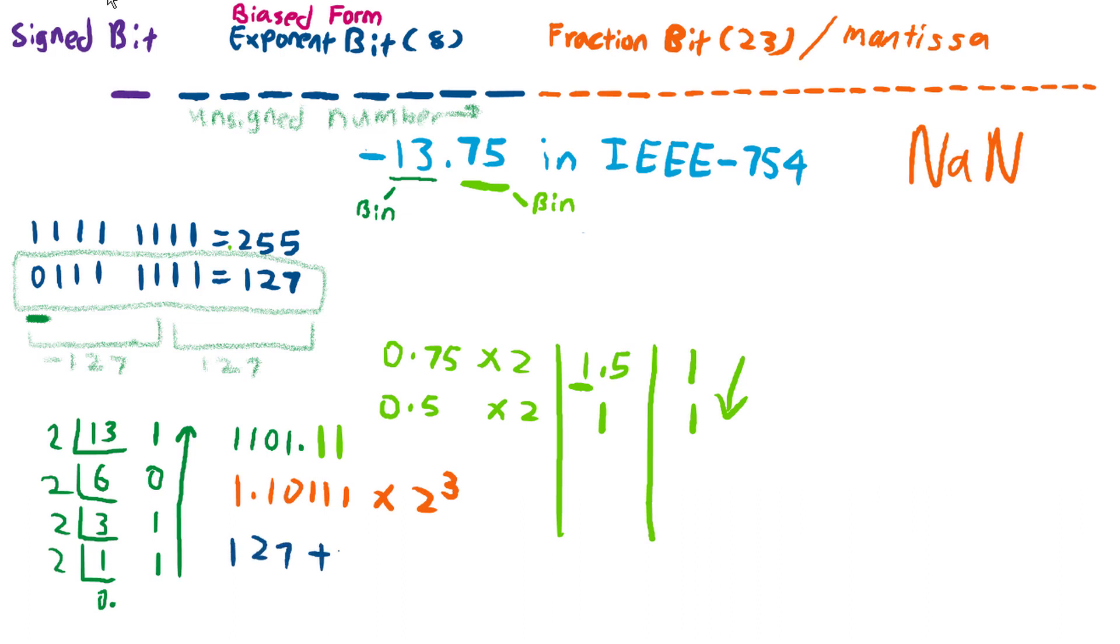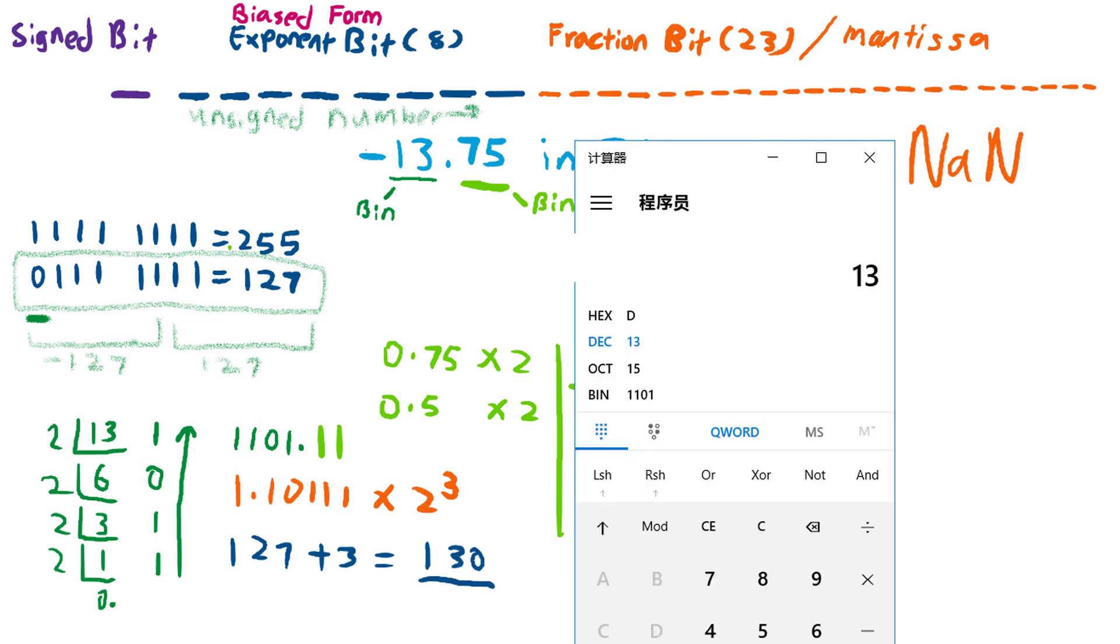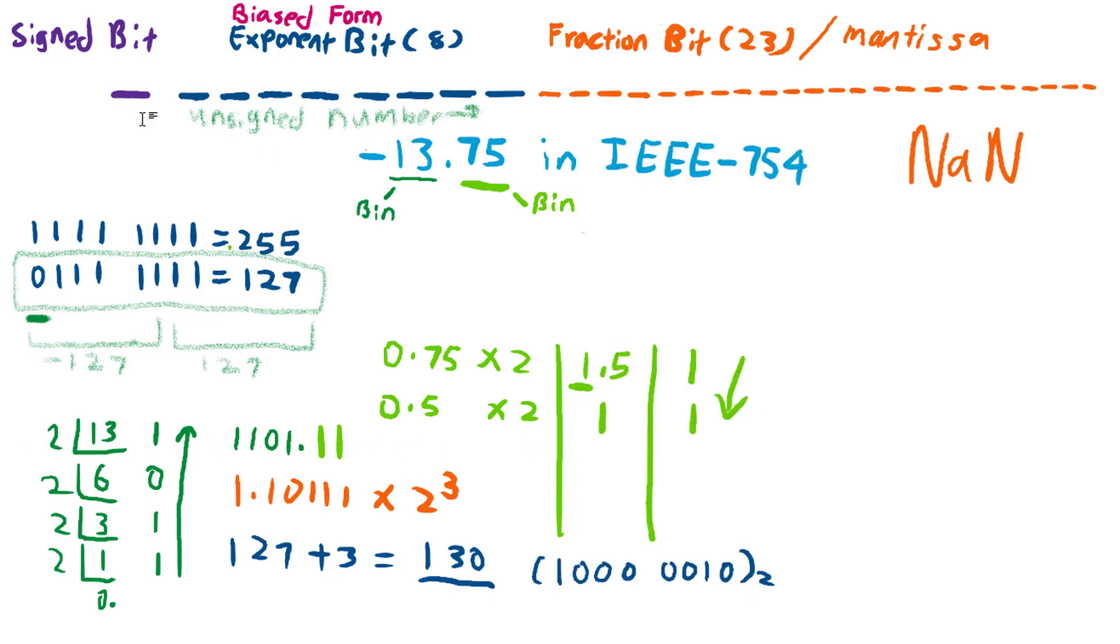We add 127 with 3, so the answer is 130. Then we are going to convert 130 to binary form. Finally, we can write down the answer. Because the sign is negative, the sign bit is 1, and then the exponent bit is 10000010.